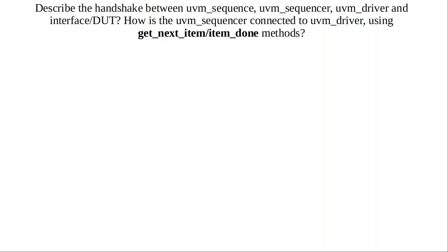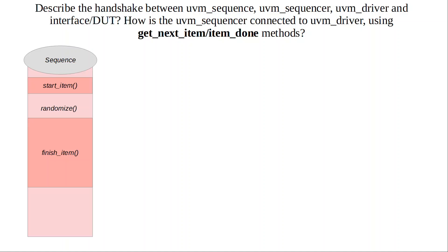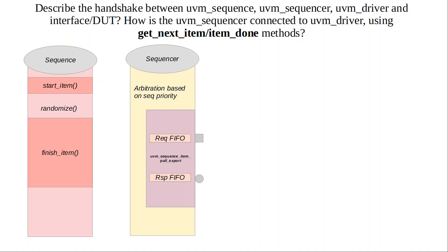There are two different ways this interaction or protocol happens: using the get_next_item and item_done method protocol, or the get and put methods of the driver. Let's first go over the get_next_item and item_done combination. Here you have your sequence, which has the start_item method, the randomize, and the blocking finish_item. Both start_item and finish_item are blocking calls. You have the sequencer with its arbitration scheme for the priority of the sequence, and a request sequence item FIFO and a response sequence item FIFO.